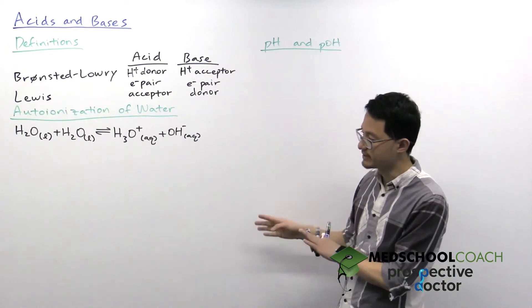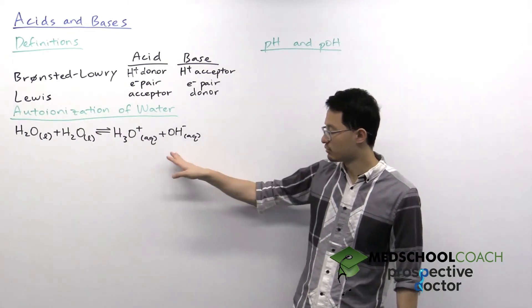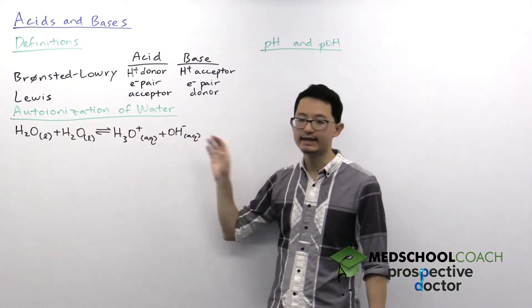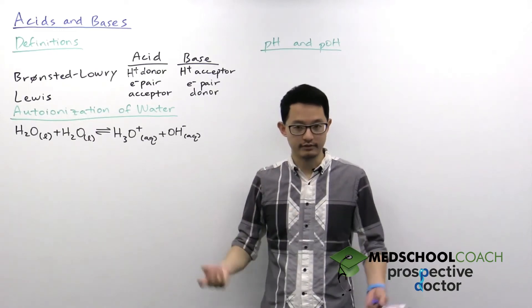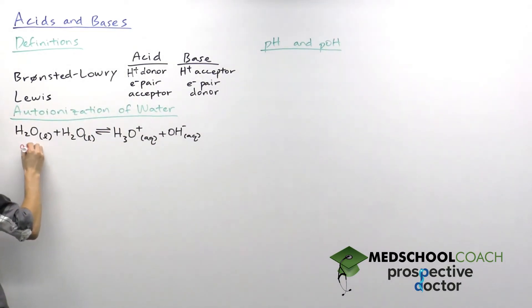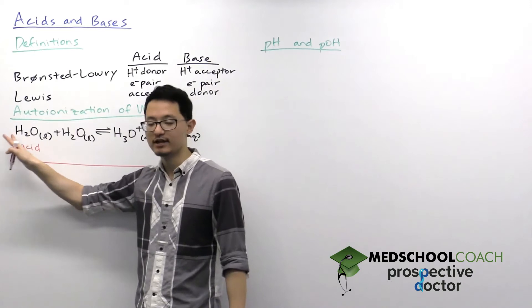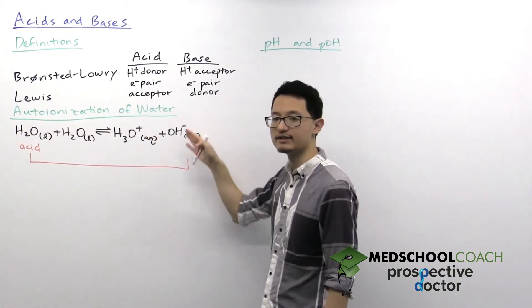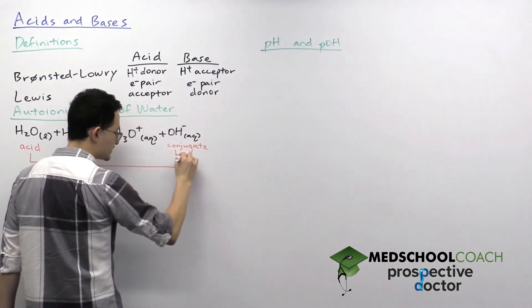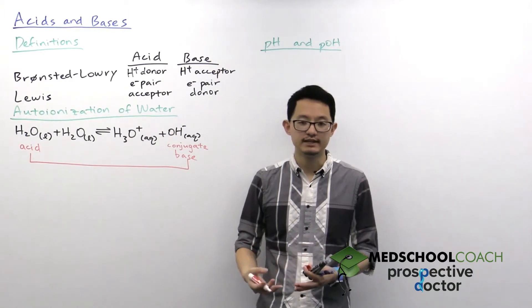So now that we know the definitions of acids and bases, let's take a look at the auto-ionization of water. This is a process where water molecules in solution will spontaneously form the hydronium ion and the hydroxide ion. And this is a particularly interesting reaction because if you look at what's going on, one of the water molecules is acting as an acid and the other one is acting as a base. So if we look at this molecule over here, when it donates a proton, what's left over is OH minus. OH minus is what we call the conjugate base. So essentially the conjugate base is simply what's left over after the acid has donated its proton.